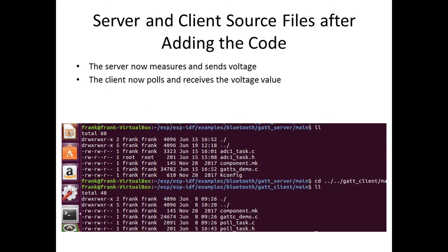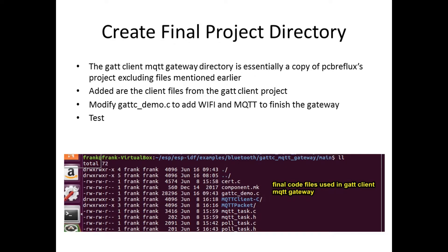Here are how the server and client source files look in their respective directories after adding the required code. The server now measures and sends voltage, and the client now polls and receives the voltage value. Client and server are working together. A final project directory is created. Copy PCB Reflux's project, excluding the files mentioned earlier, into this directory, then add the client files from the GATT client project. GATCDemo.c is then modified to add Wi-Fi and MQTT to finish the gateway.